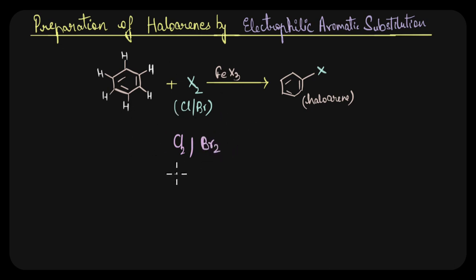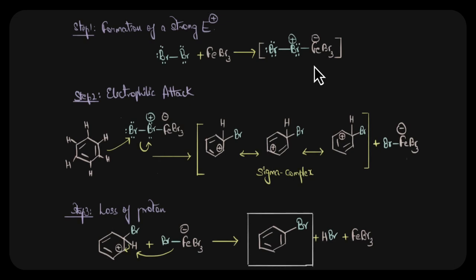This is because generation of an electrophile like Cl+ or Br+ from the halogen alone is actually difficult. That is why we need the assistance of a catalyst like a Lewis acid like FeCl3 or FeBr3 so that it can form a complex with the halogen atom to form a much stronger electrophile. Benzene can react with this stronger electrophile and produce the desired haloarene.